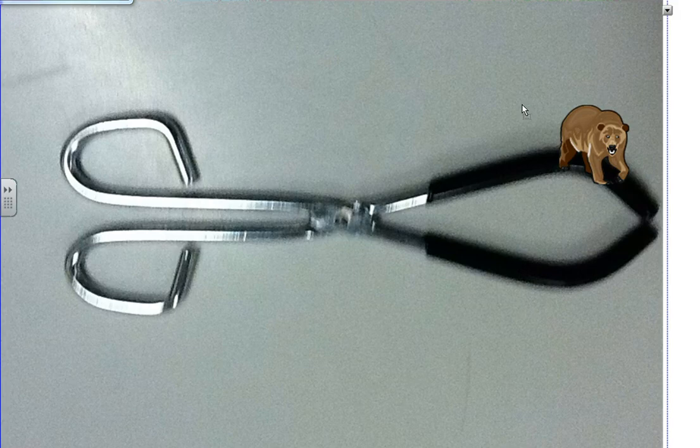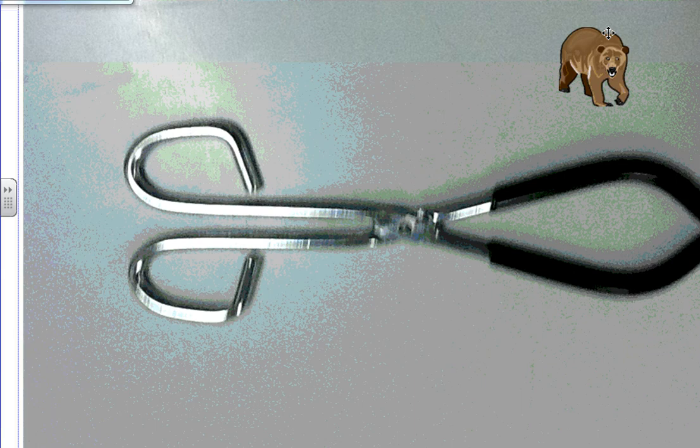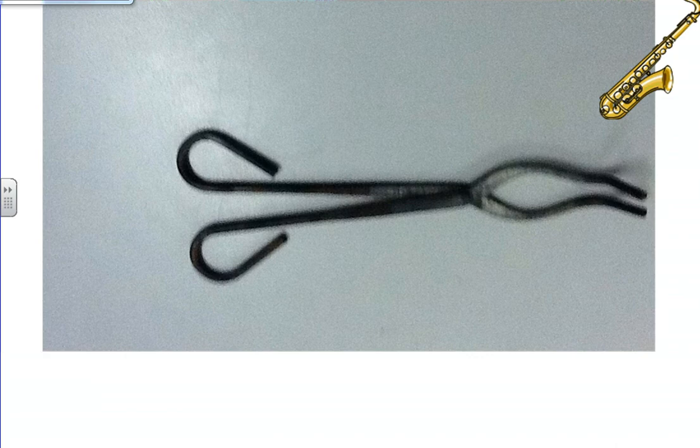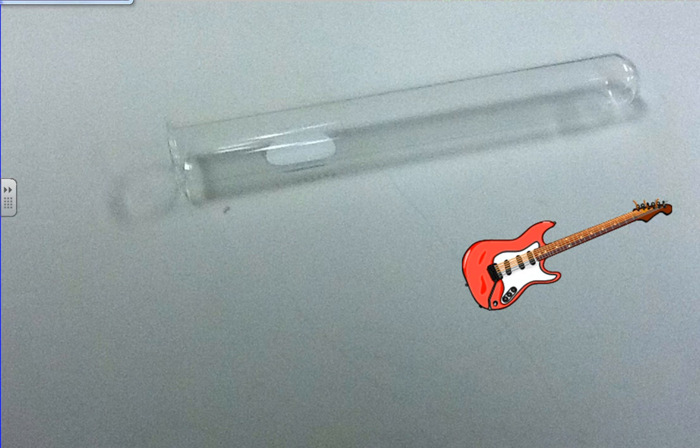Moving on to the next item, next item we have here very similar, possibly a relative of the beaker tongs, is simply his great great grandfather, the tongs. If you guessed tongs, give yourself a round of applause. Moving on to the next item, we have here is something that we could place inside of the test tube rack, and we call this a test tube. Give yourself another round of applause.